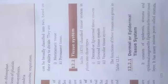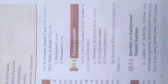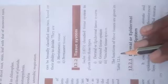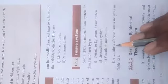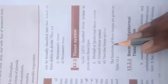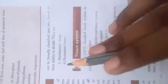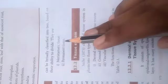The second type is permanent tissue. Permanent tissue is derived from meristematic tissue. It is differentiated tissue.